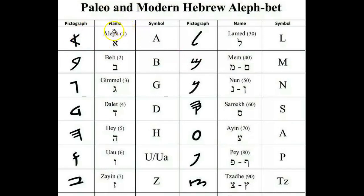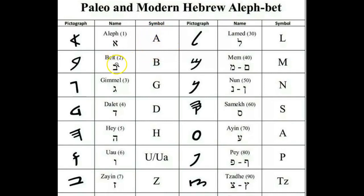The first letter right here is commonly known as Aleph. As you can see, this is how it's drawn in the modern Hebrew, and pictographically it looks like an ox head and has the symbol of an A because it makes the A sound. Next we have the Bath, or Bet as it's commonly known, and it makes the B sound.